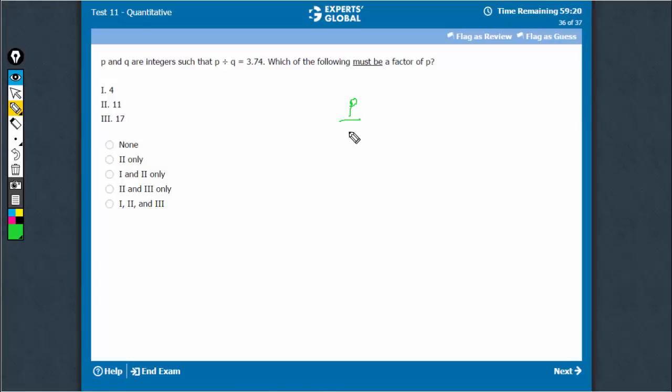If P upon Q is equal to 3.74, that means P is equal to 3.74 times Q. Q must be a multiple of 50 or something so that this becomes an integer. P is an integer, we know for sure.